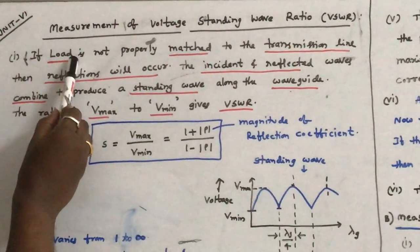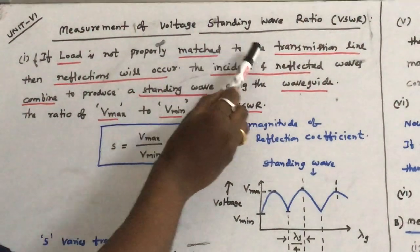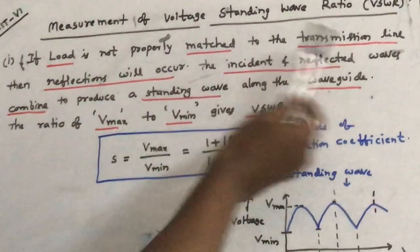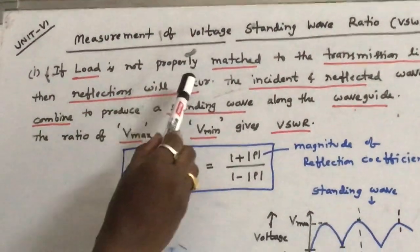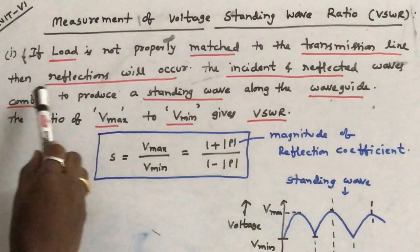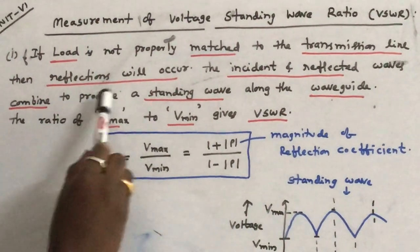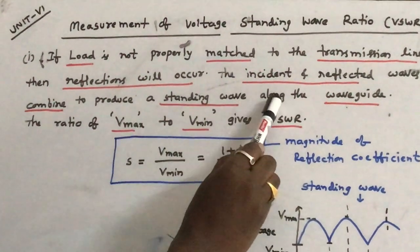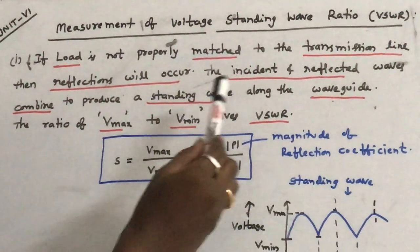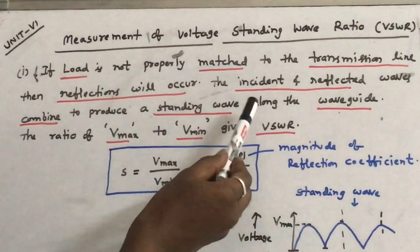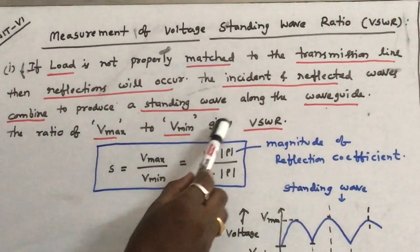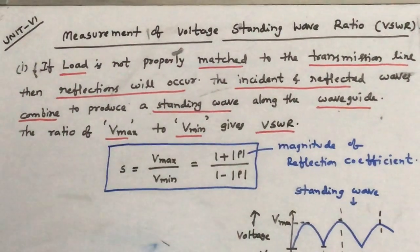If the load is not properly matched to the transmission line, reflections will occur. The incident and reflected waves both will combine to produce a standing wave along the waveguide. The ratio of V maximum to V minimum of the standing wave gives VSWR.